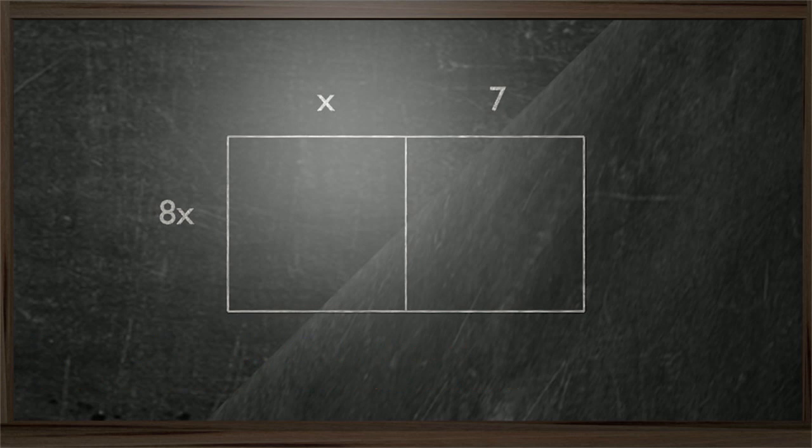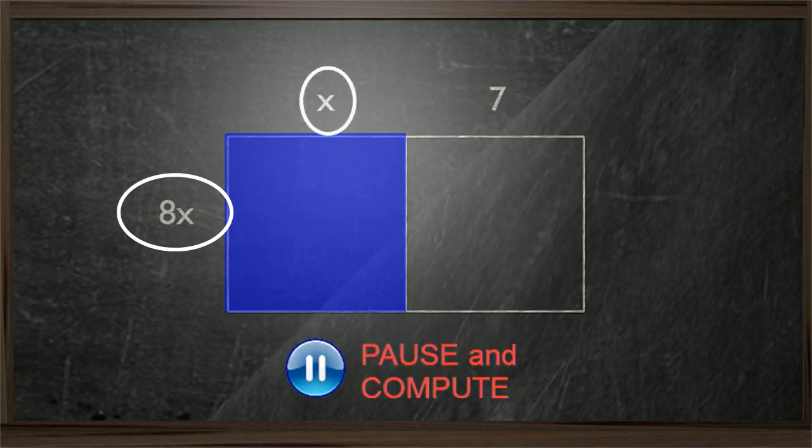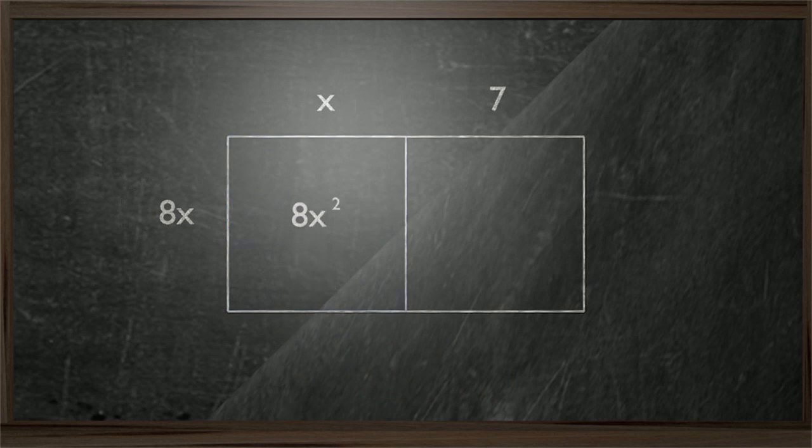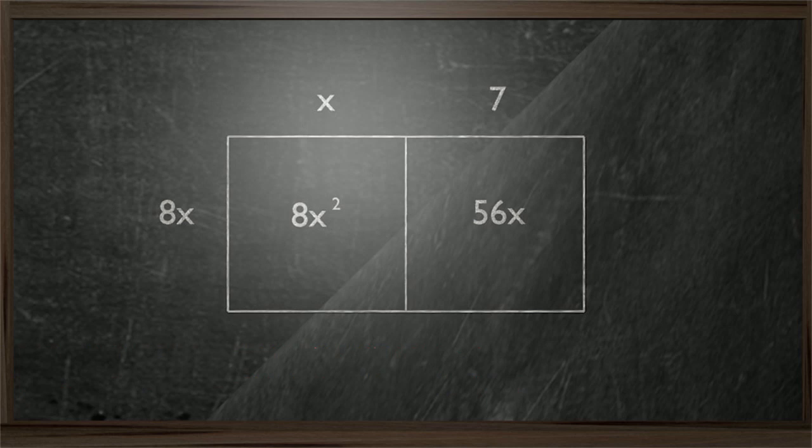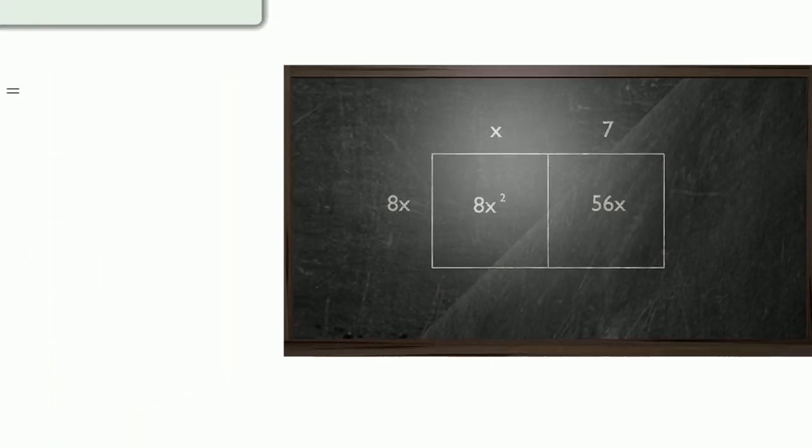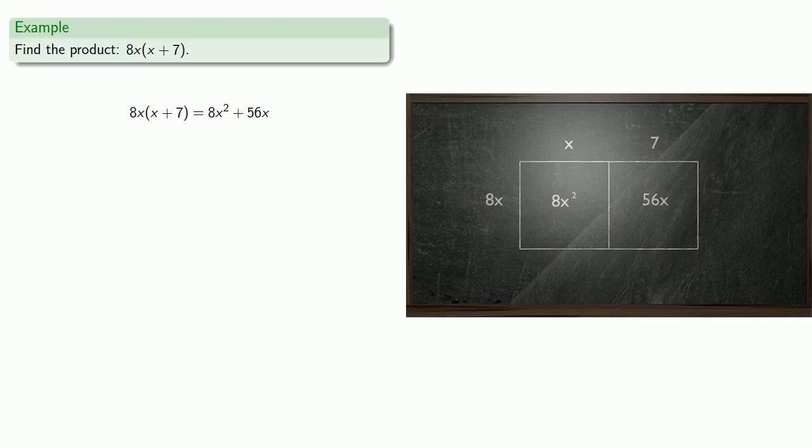Now we can find the areas of the two rectangles. This first rectangle is 8x high by x wide, so its area will be 8x squared. The second rectangle will have area 56x, and the area of the whole is going to be the sum of the two bits: 8x squared plus 56x.